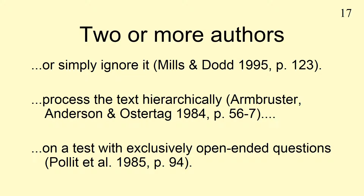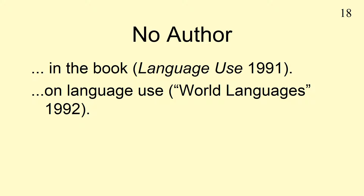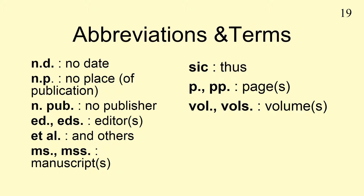When a work has two or three authors, always use the surnames of all authors in all citations. When a work has more than three authors, use only the surname of the first author followed by et al. When a work has no author, cite the first two or three words of the bibliographic entry followed by the year. The first entry is usually the title. Put the title of a periodical or book in italics and use double quotation marks around the title of an article or chapter. 'nd' is used when the date of publication is not found in the publication details of the source. Similarly, 'np' is used when the place of publication is not found in the publication details of the source. 'npub' is used if the name of the publisher is not found.